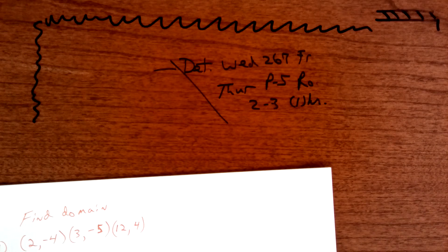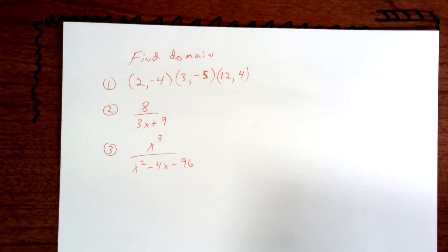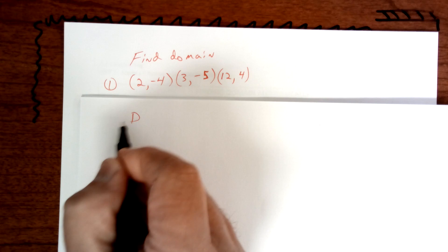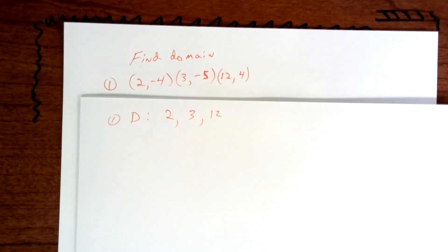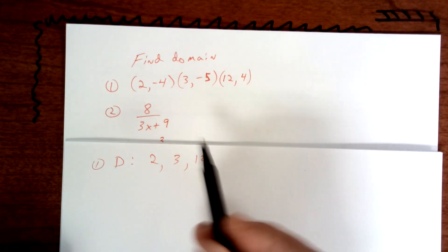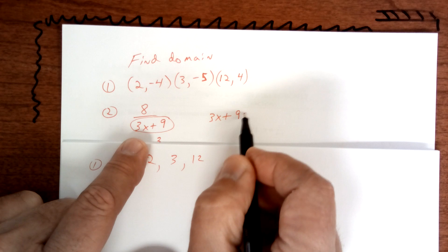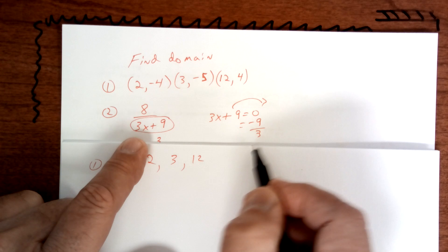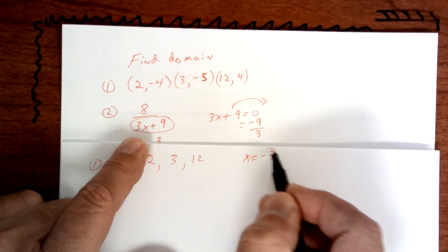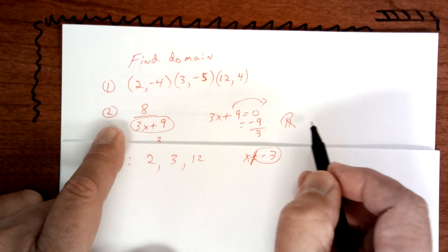We're going to turn our attention now to college algebra. This one right here — I want you to find the domain. Remember, the domain is only your x's. So put domain: 2, 3, and 12. On the next one, the domain is this cannot equal 0, so you set it equal to 0 and you solve it. You move that over and you get negative 9, divide by 3, and you get negative 3. Now x can be anything but not negative 3, so for number 2 it's going to be all real numbers but not negative 3.